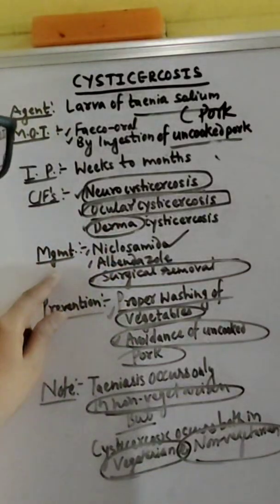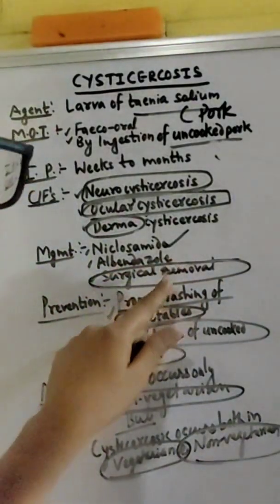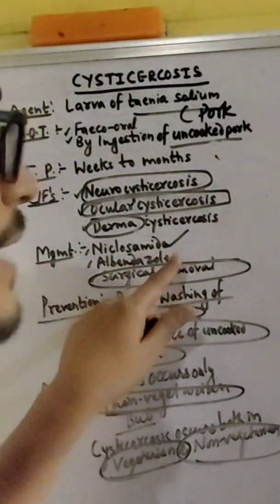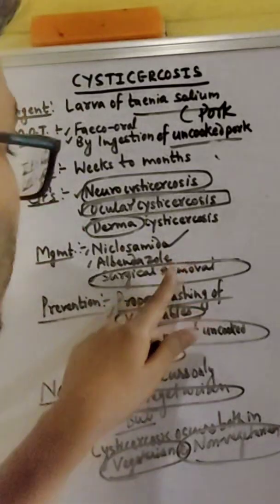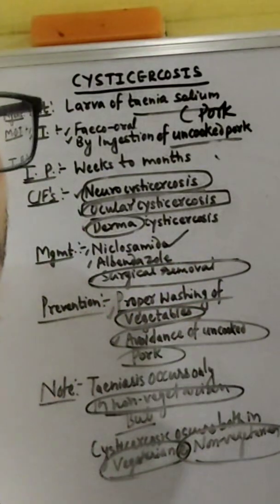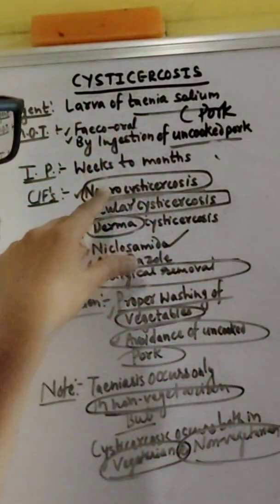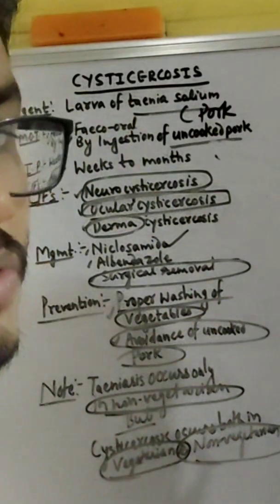So what is the management? Niclosamide, albendazole, antihelminthic drugs, and surgical removal in the case of neurocysticercosis.